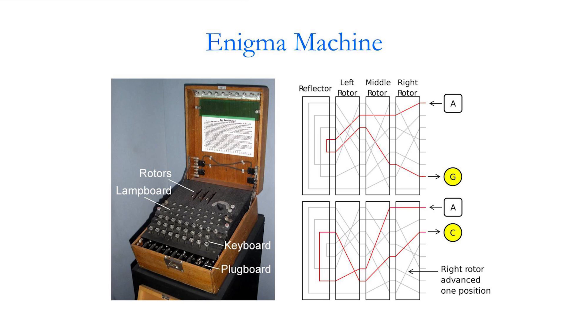Now what happens is that after you type A, the first rotor rotates. So if I were to type A again, there would be a different set of contacts now. It wouldn't be G that would come out, but some different letter, C.